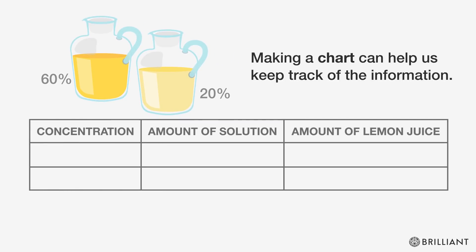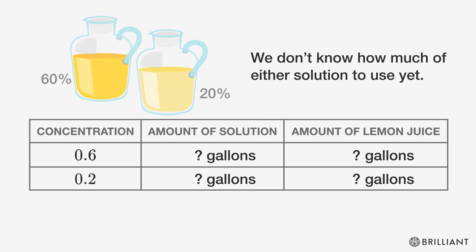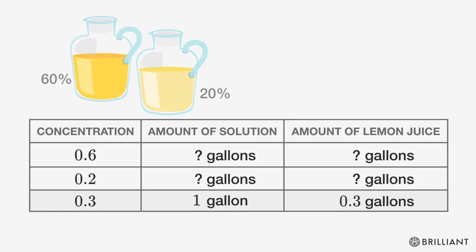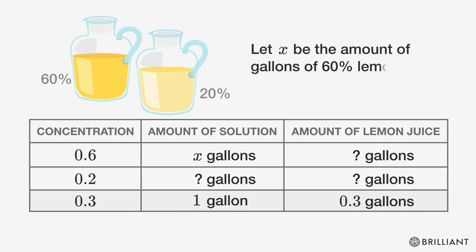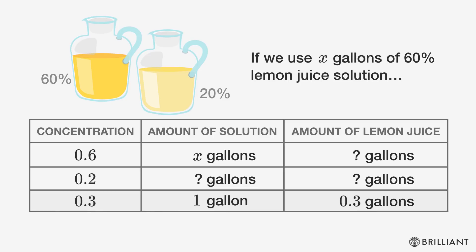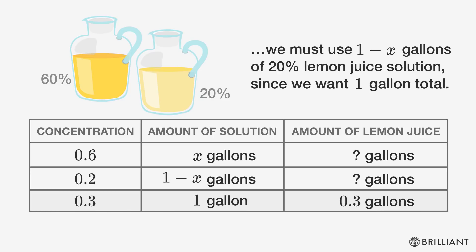Making a chart can help us keep track of the information. We don't know how much of either solution to use yet. The last row is for the solution we want to create. Let X be the amount of gallons of 60% lemon juice solution used. If we use X gallons of 60% lemon juice solution, we must use 1 minus X gallons of 20% lemon juice solution, since we want 1 gallon total.